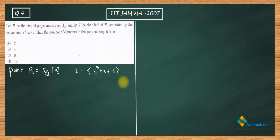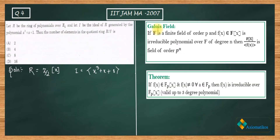Before proceeding, let me show you an important result in ring theory, or abstract algebra. With the help of that result you can figure out this question in just a minute. Here are two notes that we have to study.